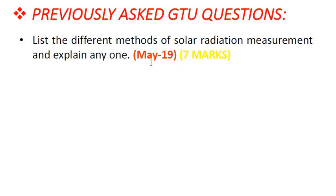A previously asked GTU question from May 2019 asks to list different methods of solar radiation measurement and explain any one method for 7 marks. This presentation has covered five methods: pyranometer, pyrheliometer, sunshine recorder, pyrgeometer, and pyradiometer. Thank you.